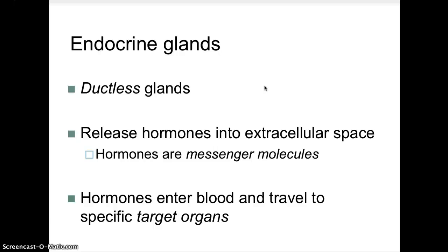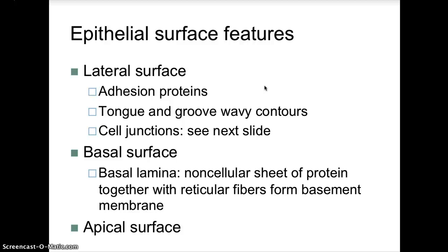Endocrine glands are ductless glands that release hormones into the intracellular space. Hormones play a role as messenger molecules, which is key when talking about homeostasis and negative and positive feedback loops. Hormones enter the blood and travel to specific target organs to trigger the release or uptake of certain substances. Epithelial surface features include the lateral surface, where we have adhesion proteins, tongue-and-groove wavy contours, and cell junctions. The basal surface includes the basal lamina — a non-cellular sheet of protein together with reticular fibers that form the base of the membrane.